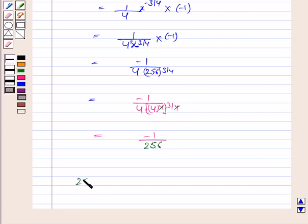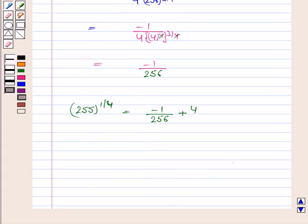Now 255 to the power 1 by 4 is equal to delta y plus 4. Now delta y is minus 1 upon 256. Plus 4, this is equal to 1023 upon 256.